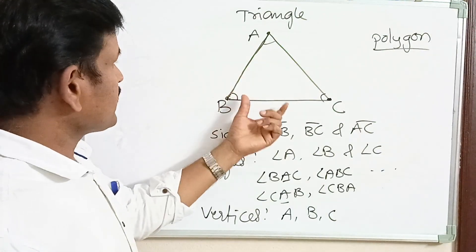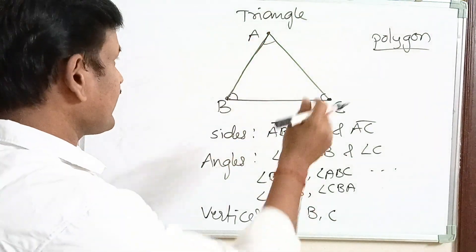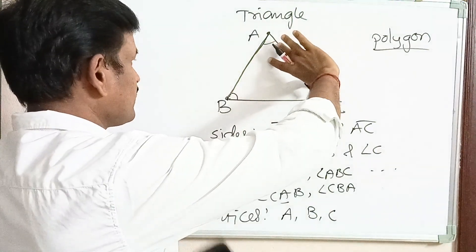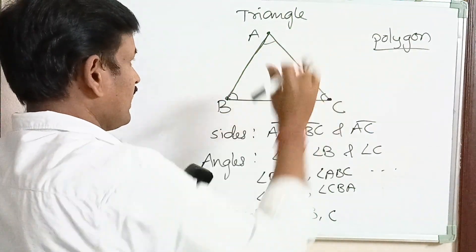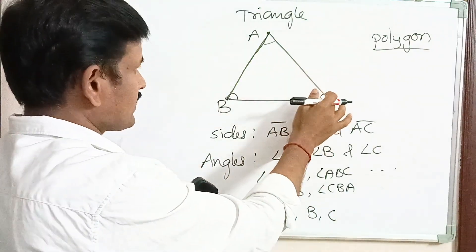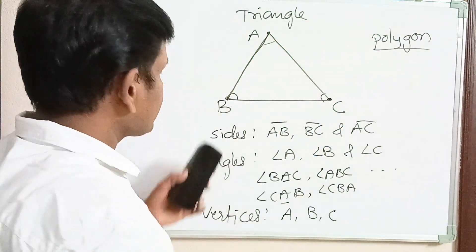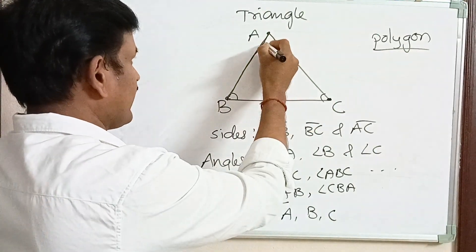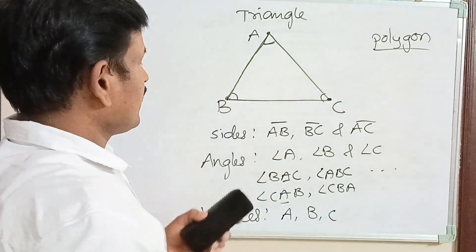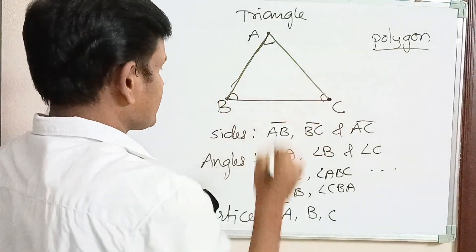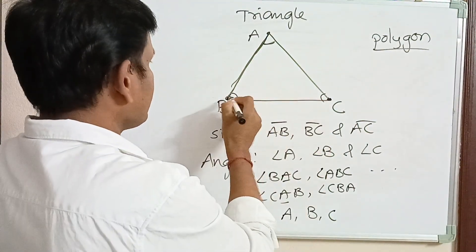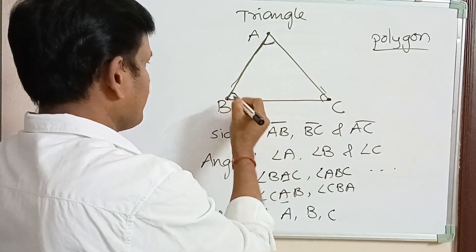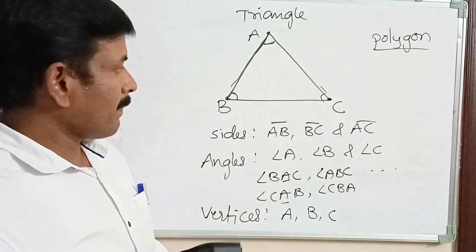Which is the side opposite to angle A? The side opposite to angle A is BC. The side opposite to angle B is AC. The side opposite to angle C is AB. Similarly, the angle opposite to side BC is angle A, the angle opposite to side AB is angle C, and the angle opposite to side AC is angle B.